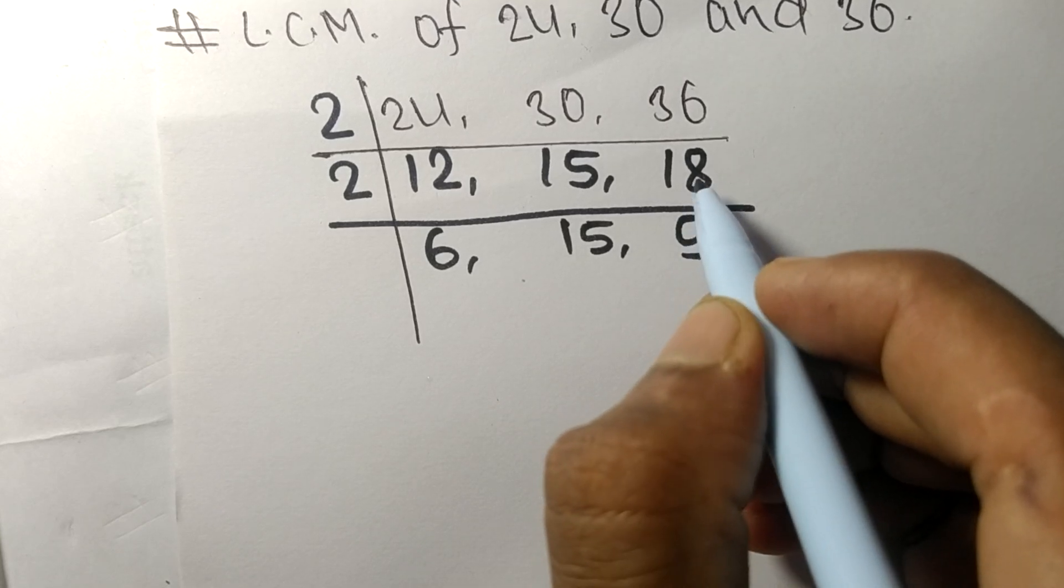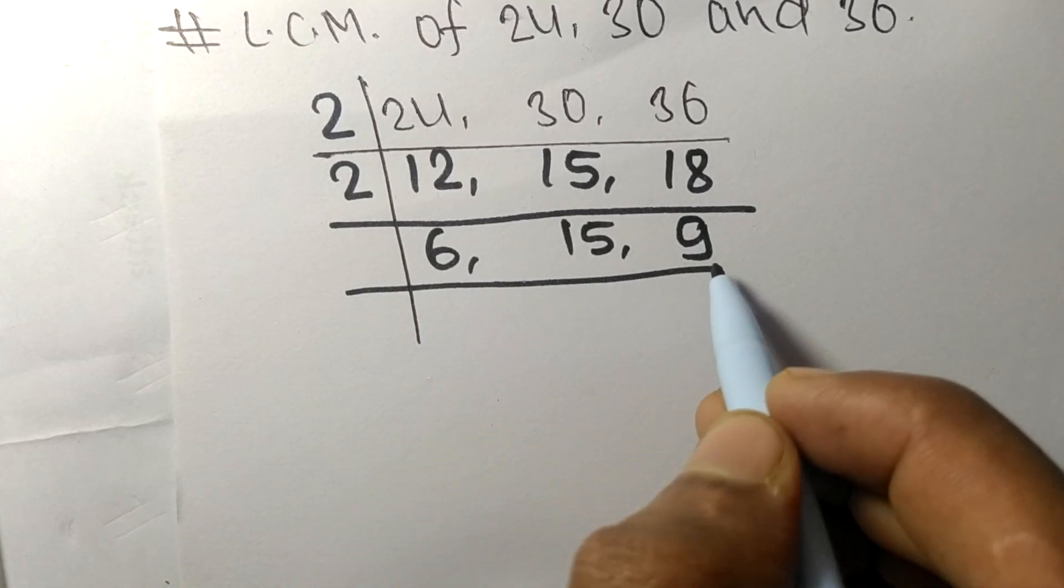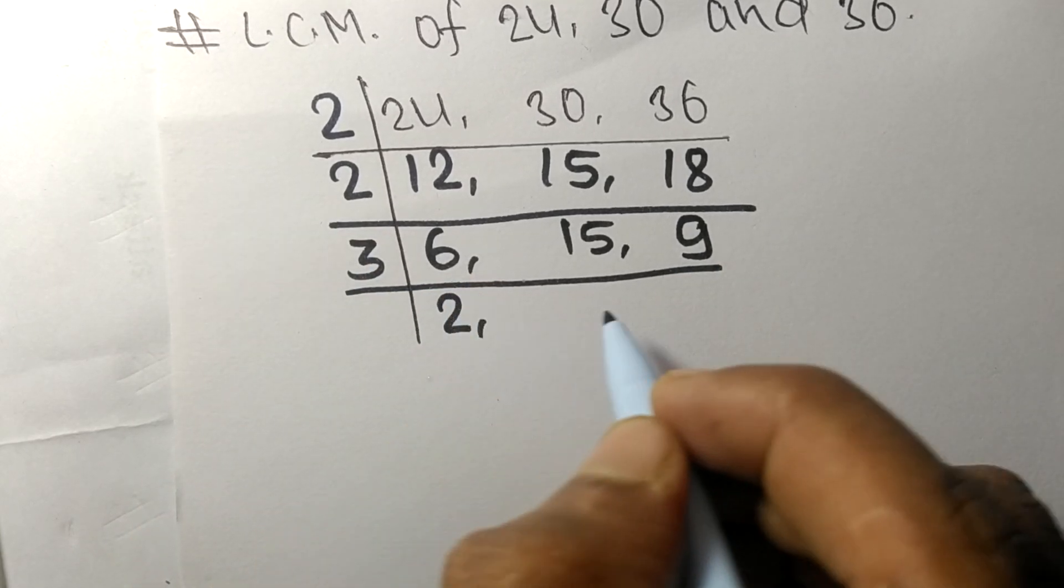Now all these numbers are divisible by 3: 3 times 2 means 6, 3 times 5 means 15, 3 times 3 means 9.